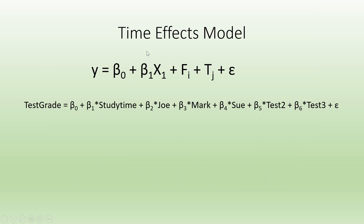So now my time effect model will be: Y is equal to beta_0 plus beta_1 * X1 plus phi_i plus tau_j plus epsilon. This is the effect of cross-section and this is the effect of the time element. My test grade is equal to beta_0 plus beta_1 * study_time plus beta_2 * Joe plus beta_3 * Mark plus beta_4 * Sue plus beta_5 * test_2 plus beta_6 * test_3. This has the effect of both the time element and cross-section unit.